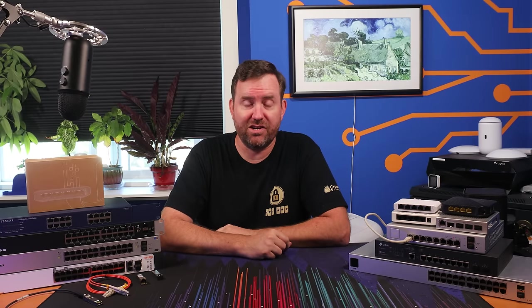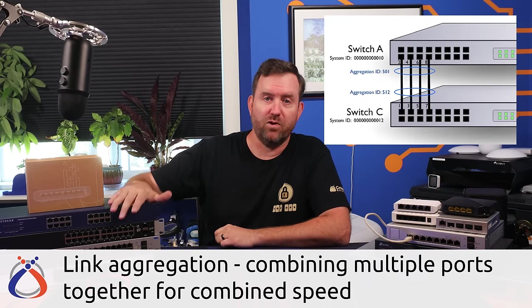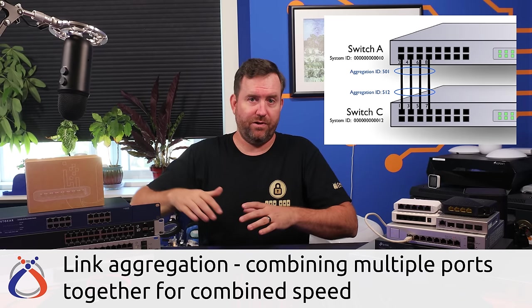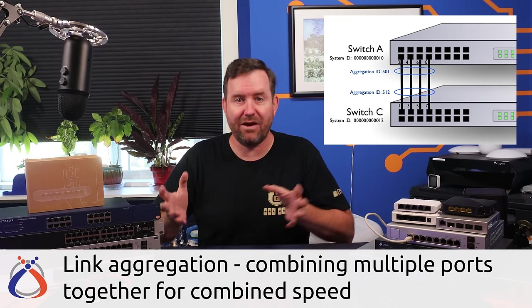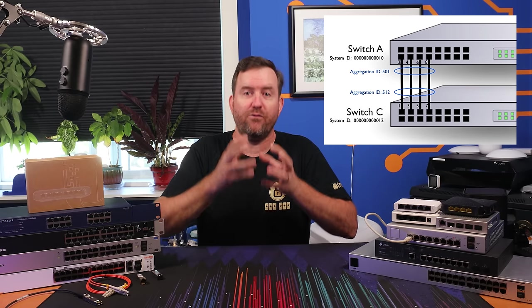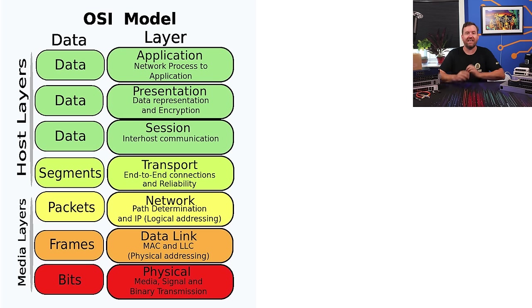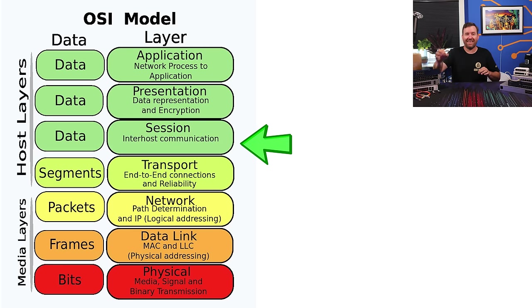Another more advanced feature is called aggregation. This is where you combine multiple ports of a switch to function as a single port. So for example, if you have four separate gigabit ports aggregated together, you essentially now have a four gigabit port. Since we're talking about more advanced features, you may also come across switches that say they're either layer two or layer three switches. This is getting a little advanced for a beginner tutorial, so I'm going to keep it really simple here.